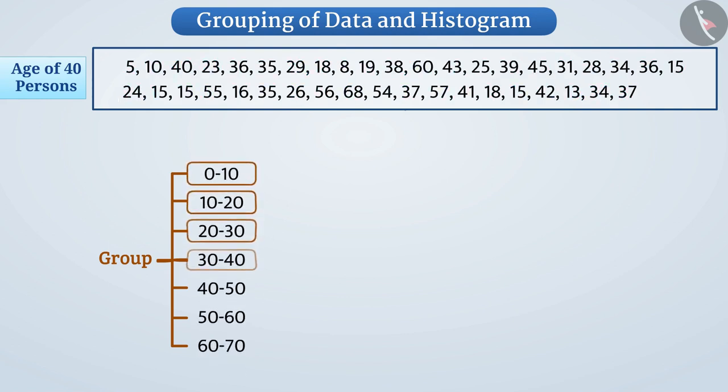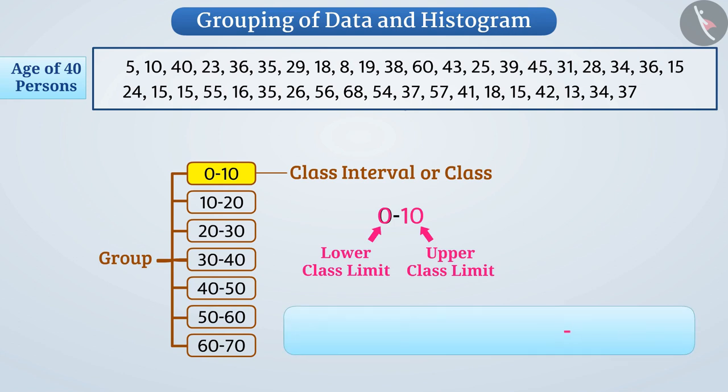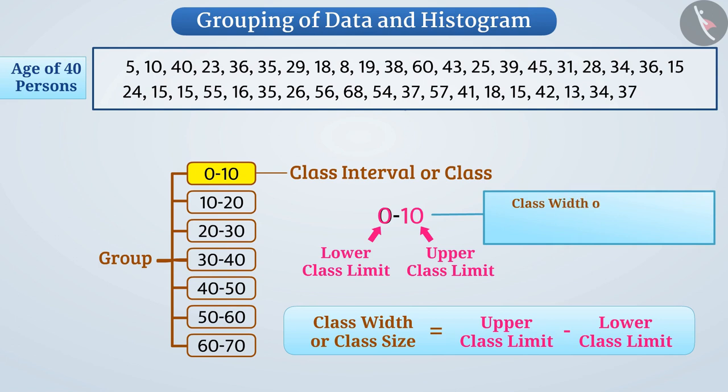We call each group a class interval or class. Each class interval has a lower class limit and an upper class limit. Like 0 to 10 has lower class limit 0 and upper class limit 10. By subtracting the lower class limit from the upper class limit of class interval, we get the difference between the two. We call it class width or class size of that interval. For example, the class width or class size of the interval 0 to 10 is 10 minus 0 equals 10.